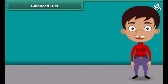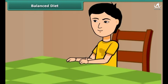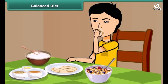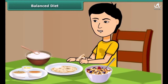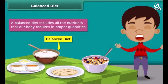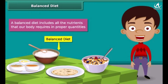As we know that all kinds of foods do not contain all the components. Our meals should have a balance of the different nutrients that our body needs for growing and maintaining good health. Such a diet is called a balanced diet. In other words, a balanced diet includes all the nutrients that our body requires in proper quantities. So we should accept the fact that having a balanced diet is the best way to live a healthy life.